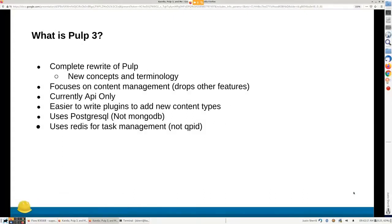You may or may not be familiar with PULP3, so let me talk about what it is. PULP2 is the content management back end of a Katello installation. It provides the ability to create repositories, manage the content, and serve the content. Katello basically provides workflows on top of that.